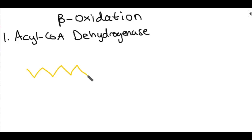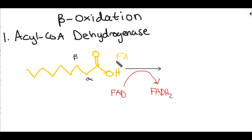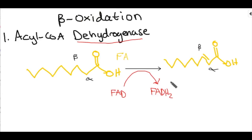Reaction 1 — acyl-CoA dehydrogenase: We have our alpha and beta carbons on our fatty acid. A molecule of FAD is reduced to FADH2, and this causes a double bond to form between the alpha and beta carbons — the hydrogens are taken away, giving you a trans double bond.